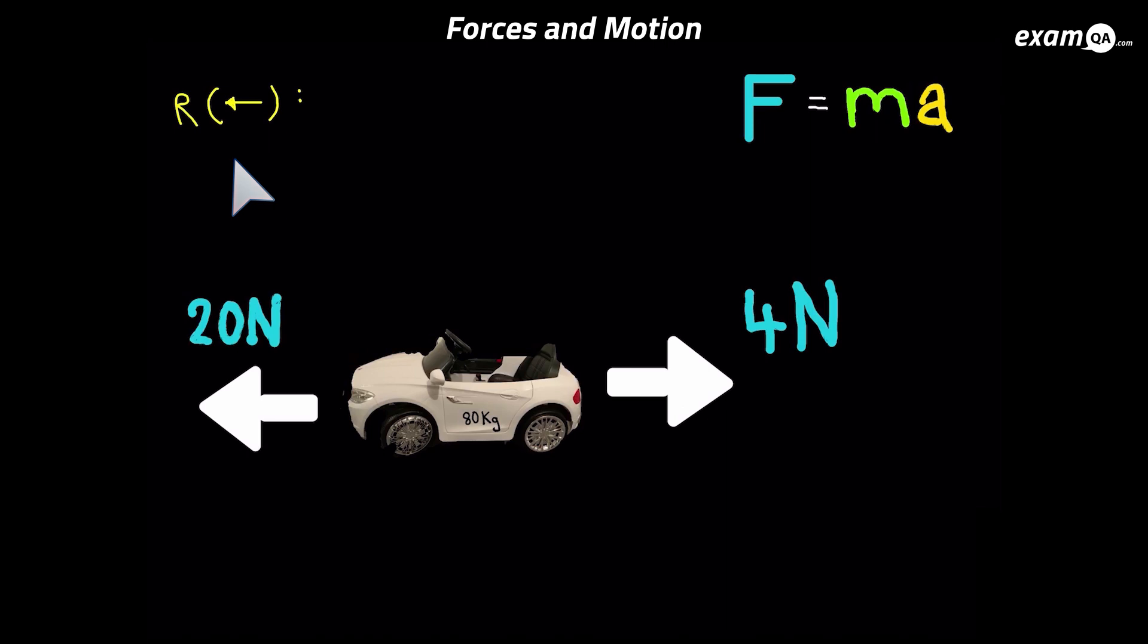So this R here written just means resolving. I'm just saying to the examiner, I'm resolving my forces. I've put an arrow to the left to say the left direction is positive. So any force which is to the left, I'm going to put down as positive. Any force to the right, I'm going to put down as negative. So let's resolve these forces. 20 is positive, so we can put that down as a positive 20. And that 4 is in the other direction, opposite to the direction we said was positive, so it's going to be minus 4.